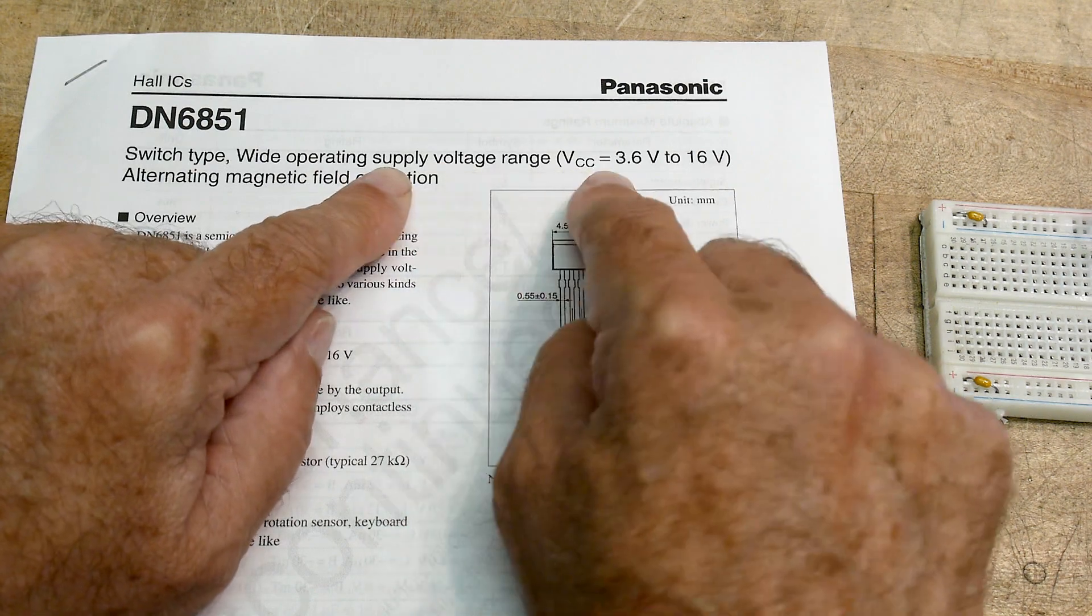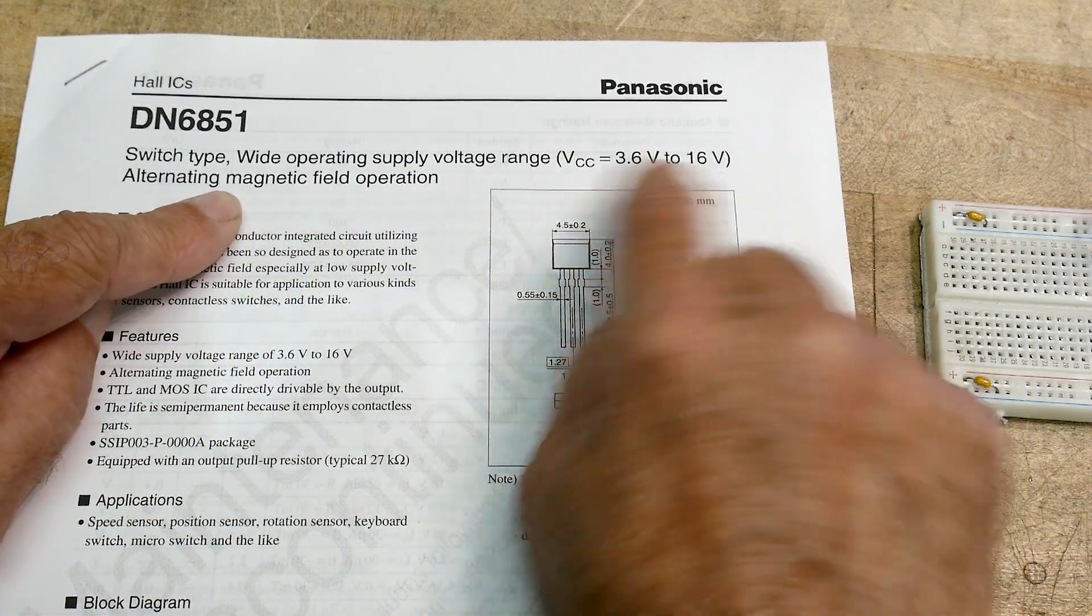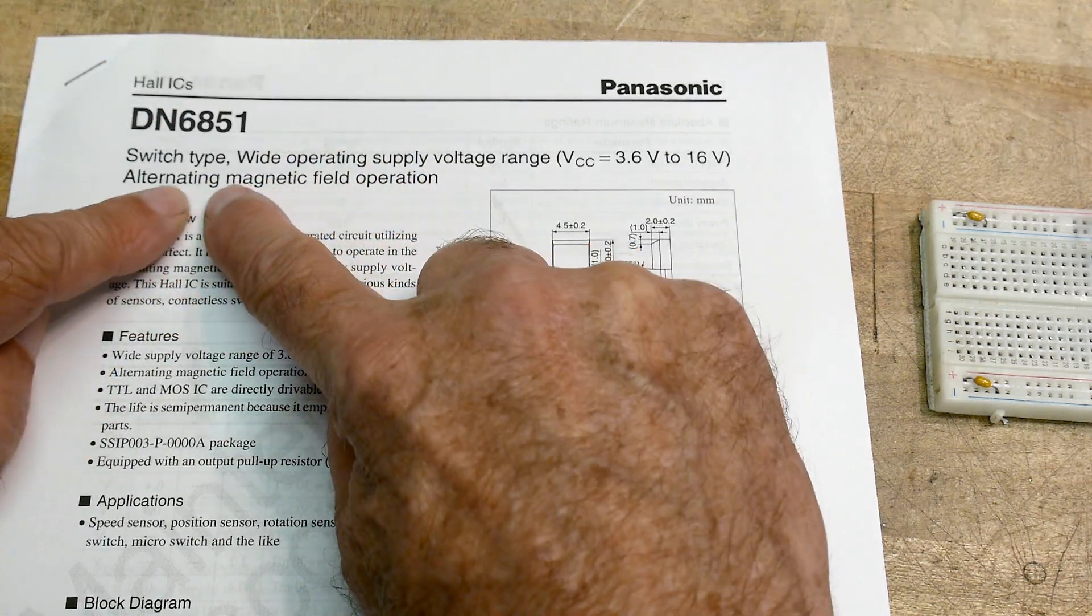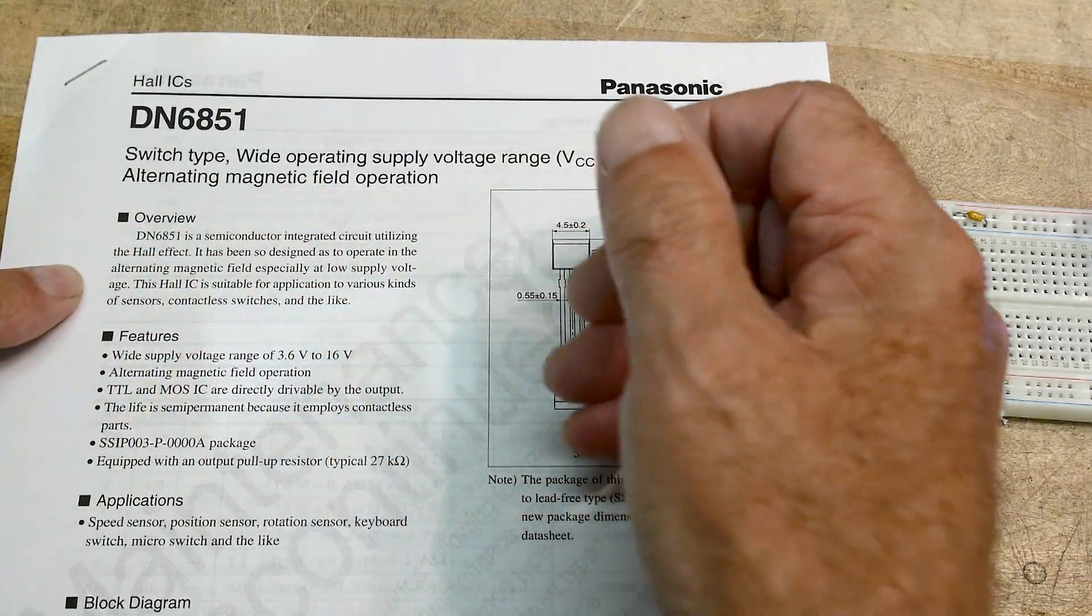Switching type, wide operating range from 3.6 volts to 16 volts. Very nice. Alternating magnetic field operation. So that will be key. You'll have to remember that. Alternating magnetic field operation.